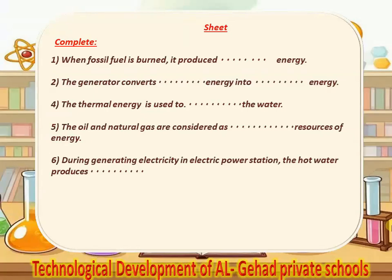Sheet, number 4, complete. Number 1, when fossil fuel is burned, it produces thermal energy. Number 2, the generator converts kinetic energy into electrical energy. Number 3, the thermal energy is used to heat the water.